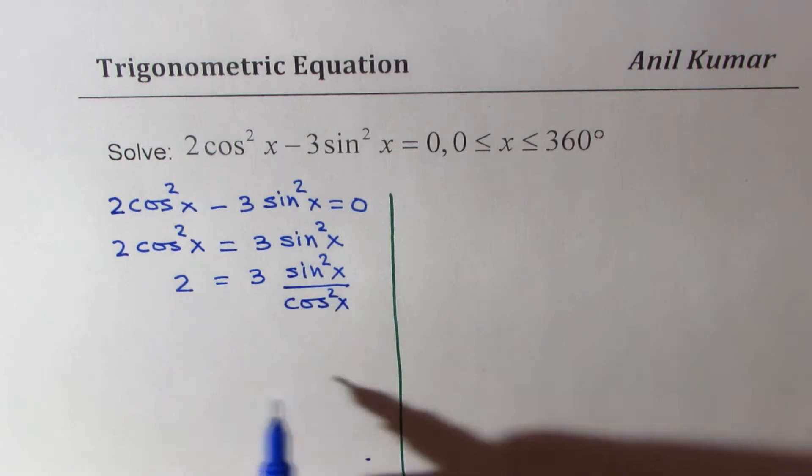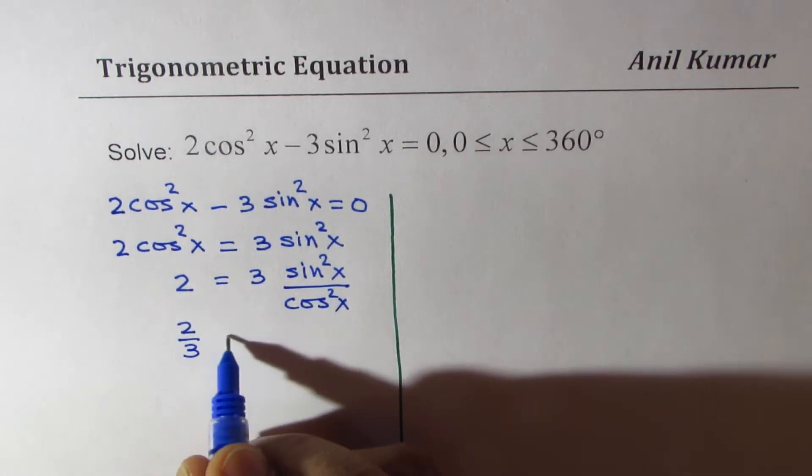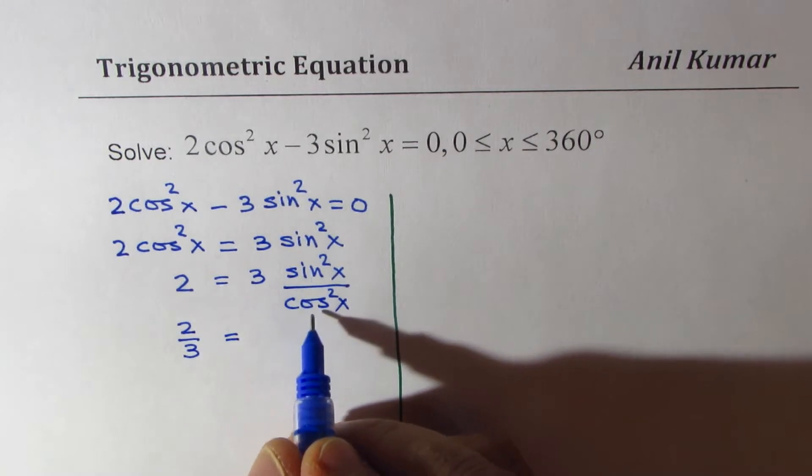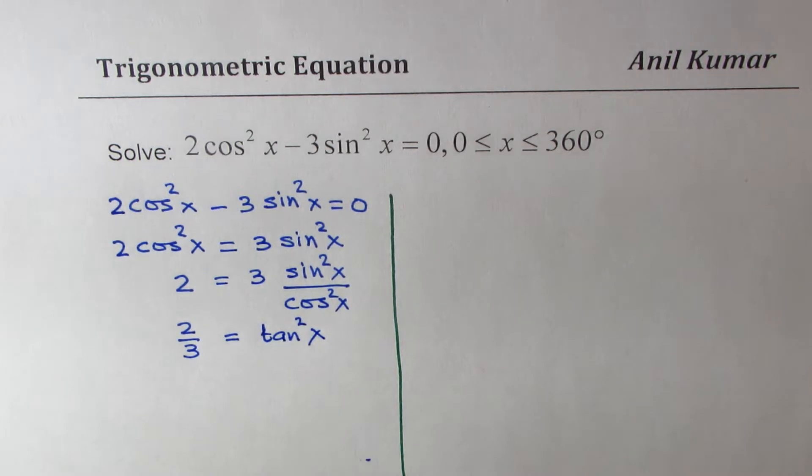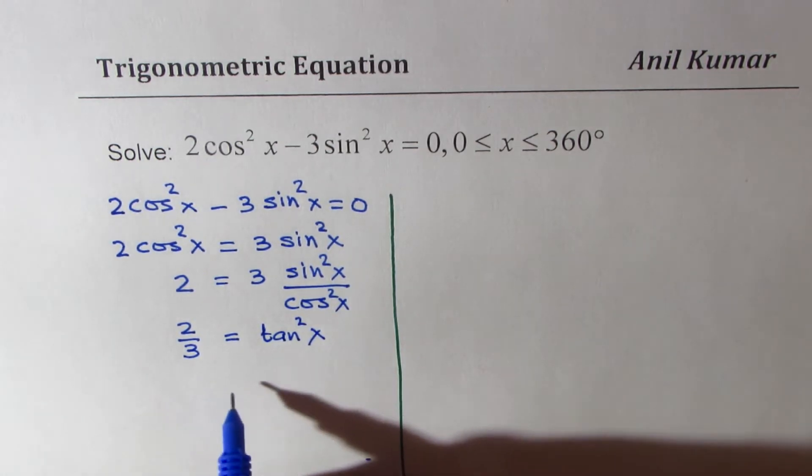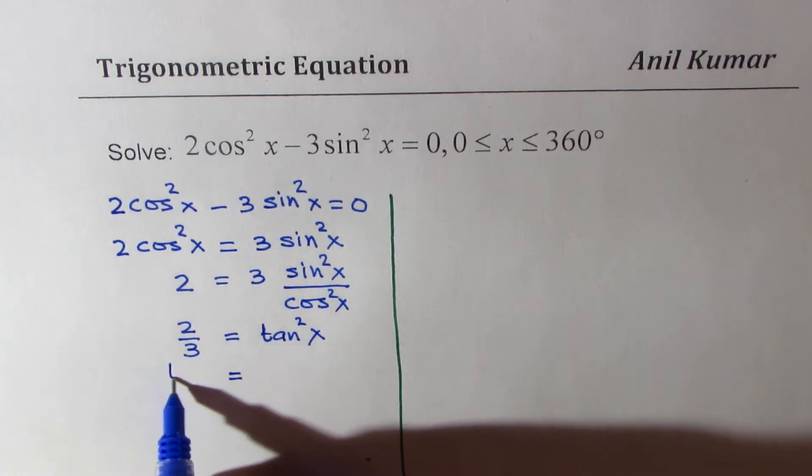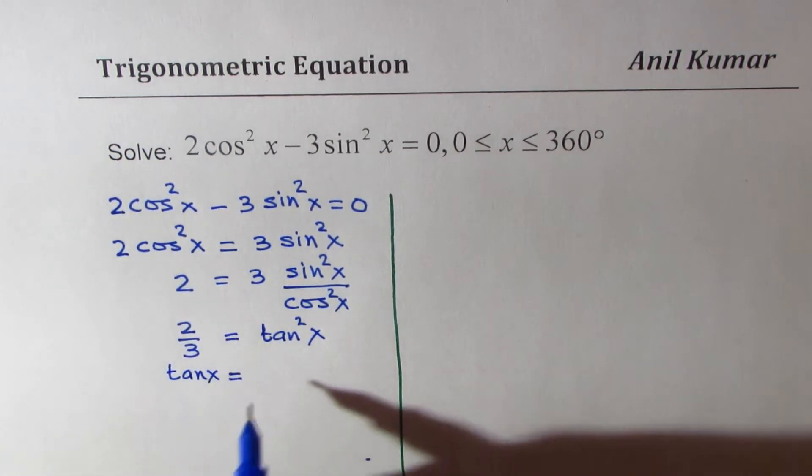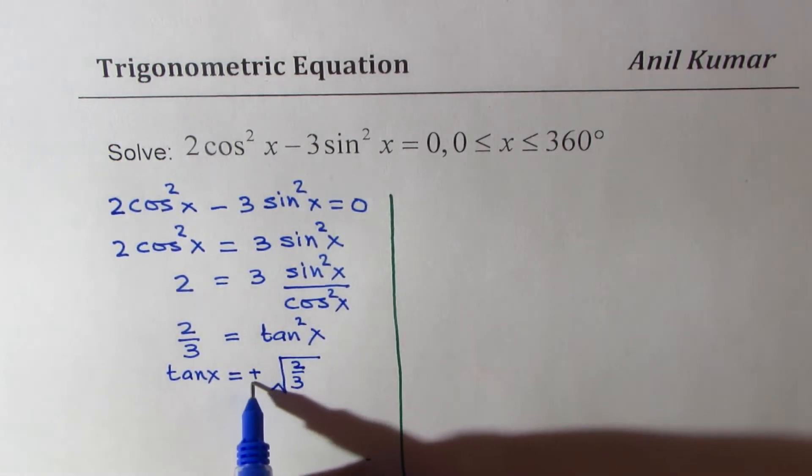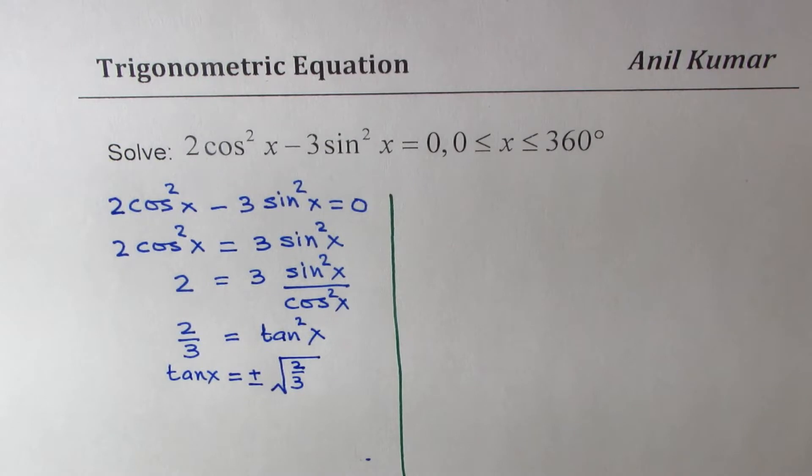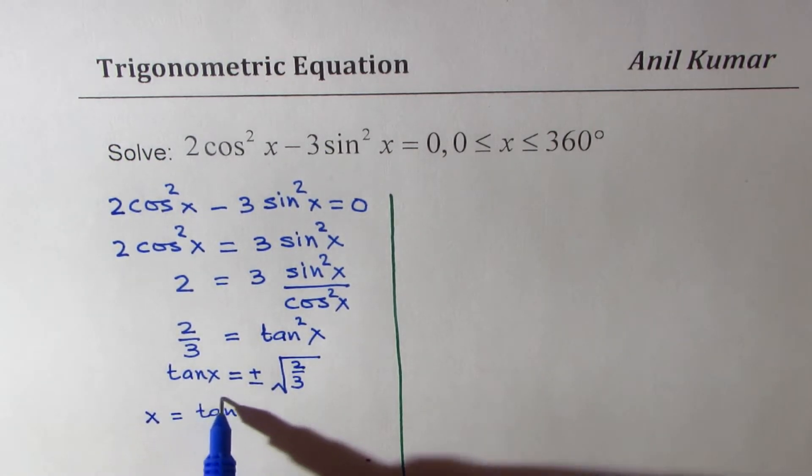I get 2 = 3sin²x / cos²x. Dividing 2 by 3, we get 2/3 = tan²x. So tan²x = 2/3, and we can write tan x = ±√(2/3). From here we can find what x is. So x = tan⁻¹(√(2/3)).